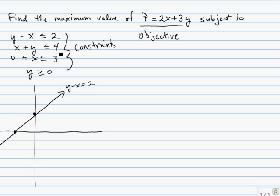The second inequality passes through the ordered pair 0, 4 and 4, 0. And so this is the line x plus y equal 4. And again, the ordered pair 0, 0 is a solution, so we'll shade below that line.